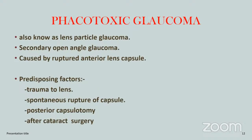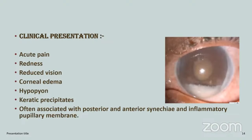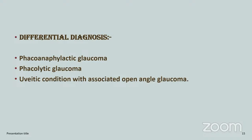Phacotoxic glaucoma, also known as lens particle glaucoma, is a secondary open-angle glaucoma caused by rupture of the anterior lens capsule — spontaneous or traumatic — posterior capsulotomy, or residual cortex and nucleus material remaining in the AC after cataract surgery. Rupture of the anterior capsule liberates lens material into the AC, causing both inflammation and obstruction of the trabecular meshwork, leading to raised IOP. Clinical features include acute pain, redness, reduced vision, corneal edema, hypopyon, and keratic precipitates on the endothelium, often associated with anterior and posterior synechiae and pupillary membrane inflammation. Differential diagnosis includes phacoanaphylactic, phacolytic, and uveitic condition with associated open-angle glaucoma.